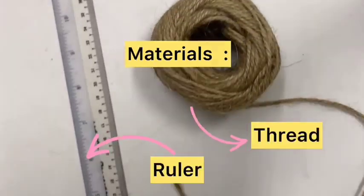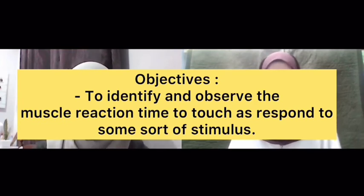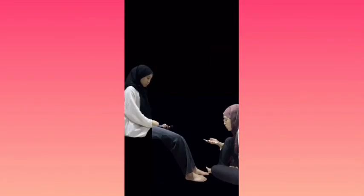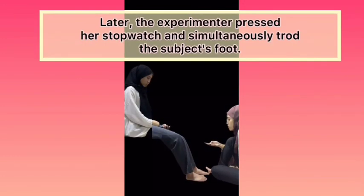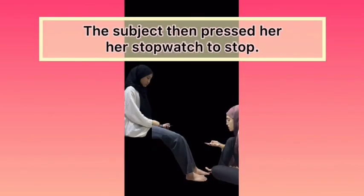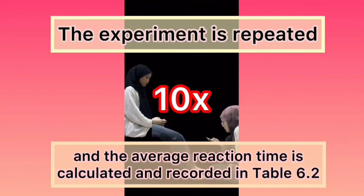The last experiment is about the reaction time to touch, which will require two stopwatches, a ruler, and a thread. The objective is to identify and observe the reaction time to touch in response to a stimulus. A stopwatch is started simultaneously by both experimenter and subject. The subject closes her eyes. The experimenter presses the stopwatch and simultaneously treads on the subject's foot. The subject then presses her stopwatch to stop. The experiment is repeated 10 times and the average reaction time is calculated and recorded in Table 6.2.